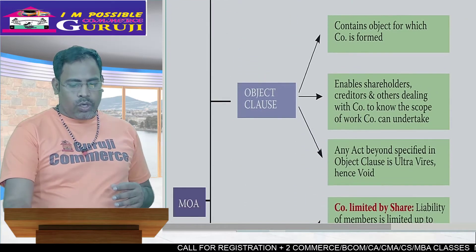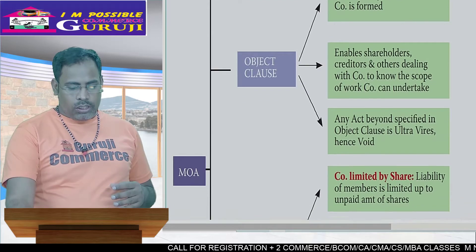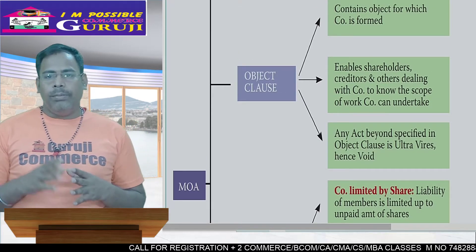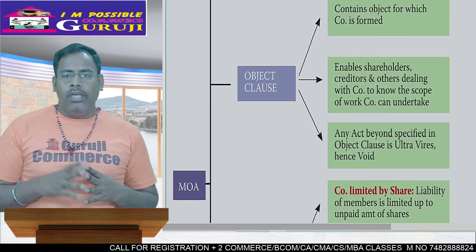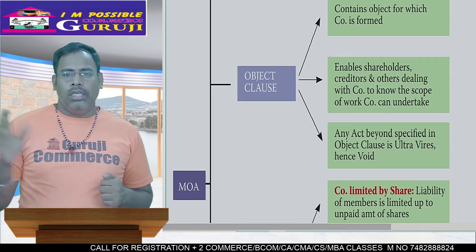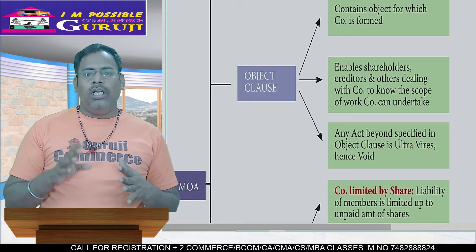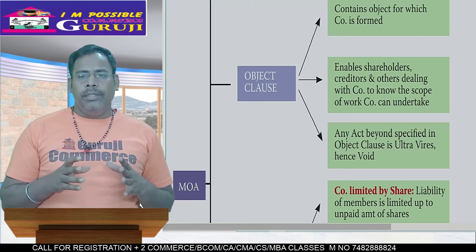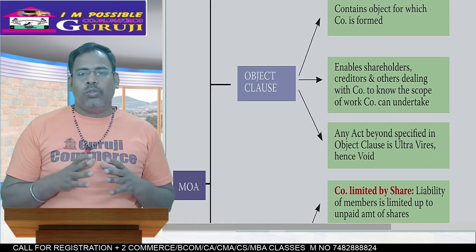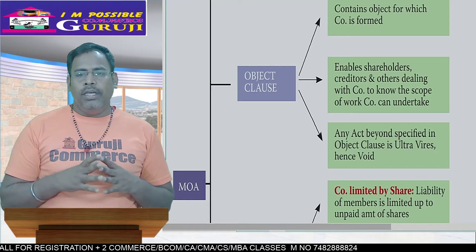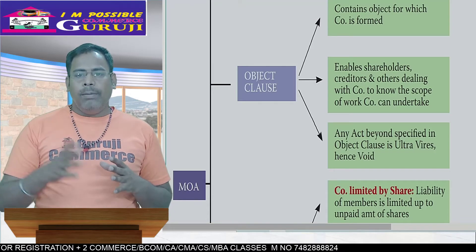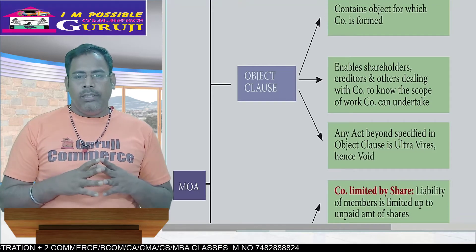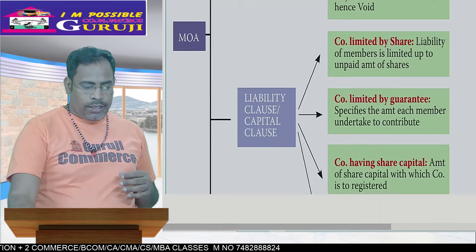Next is Object clause. Object clause contains the objective of the company firm, enabling the shareholder or creditor or their dealings — who is the company — to know the scope of the work to be undertaken. Any act beyond the specific object clause is ultra vires, hence it is void.